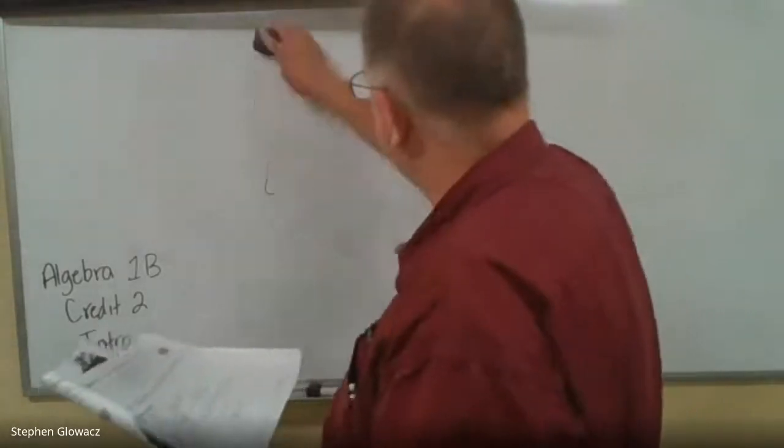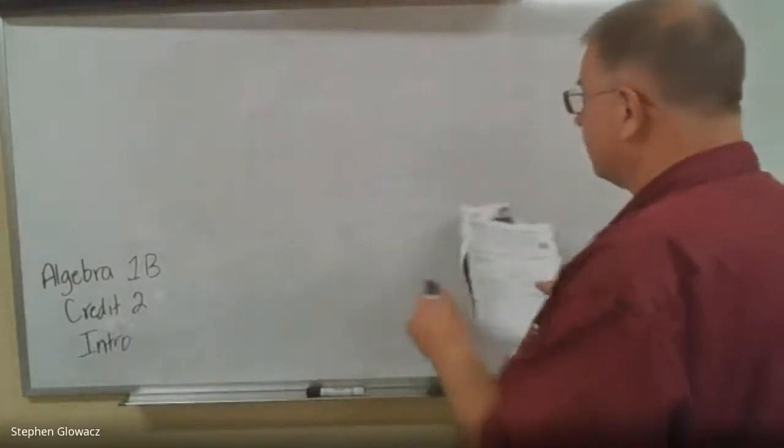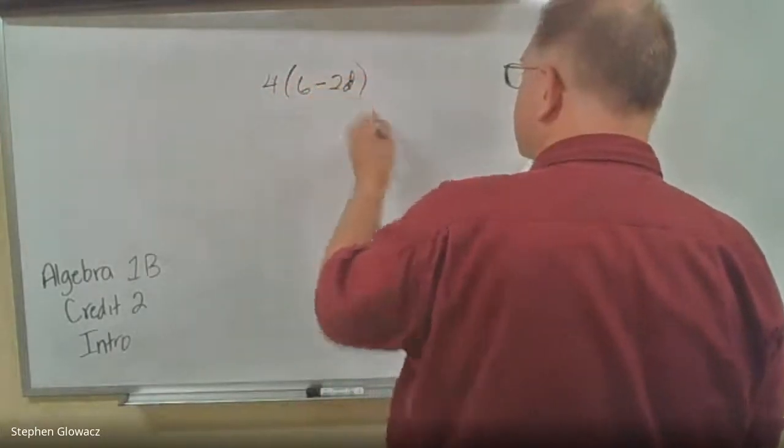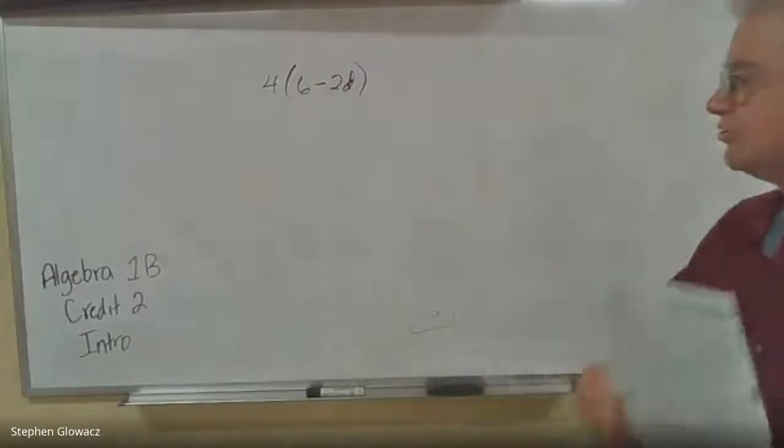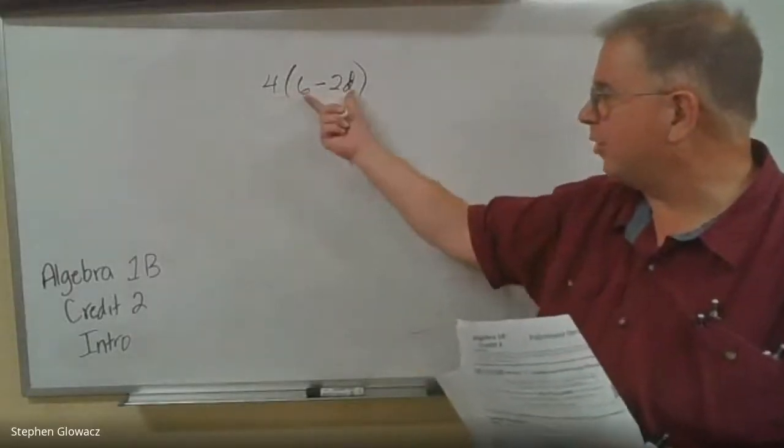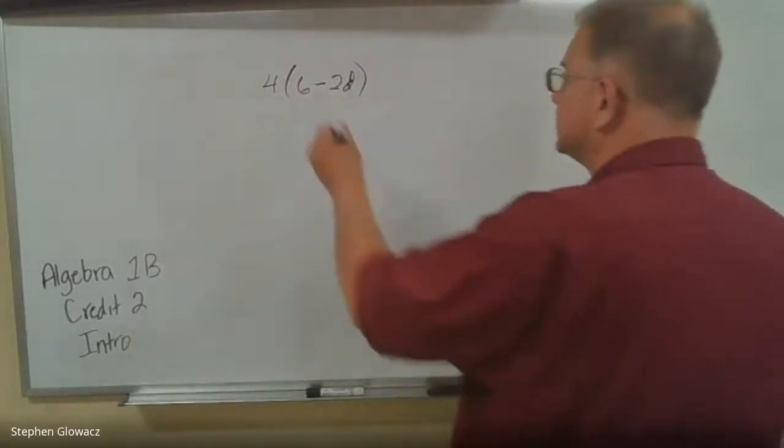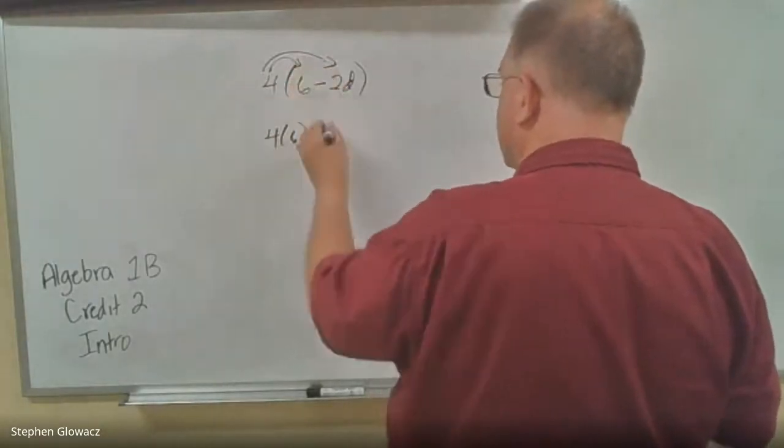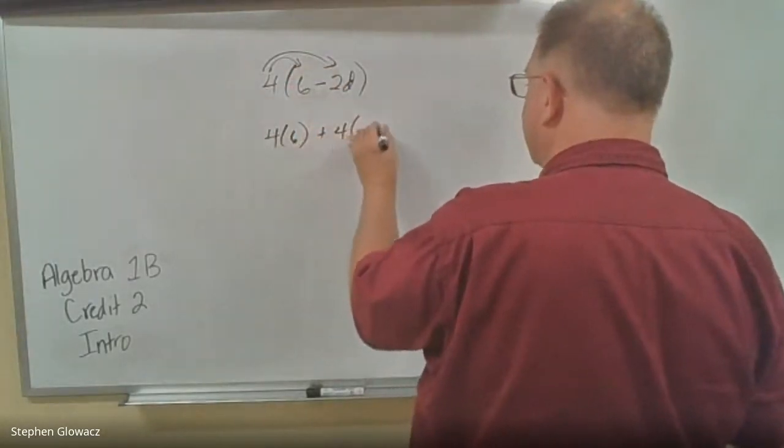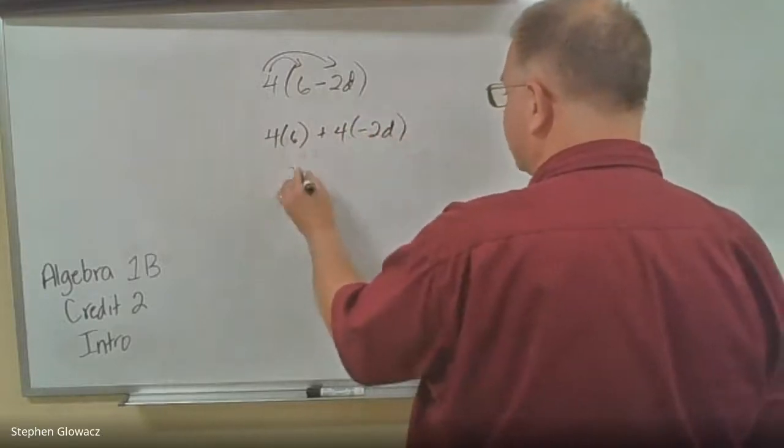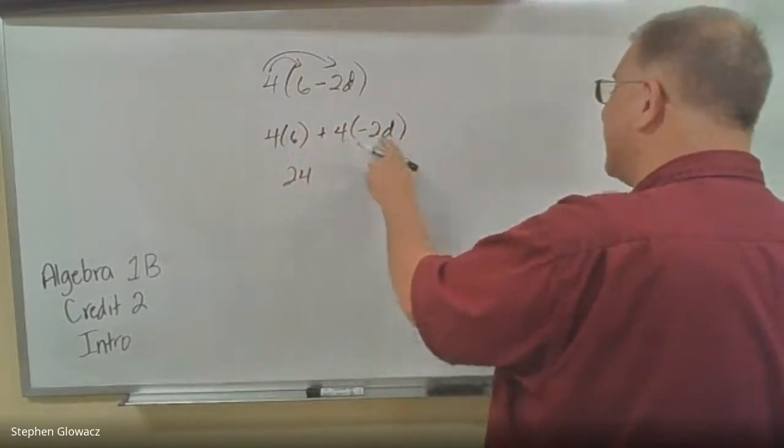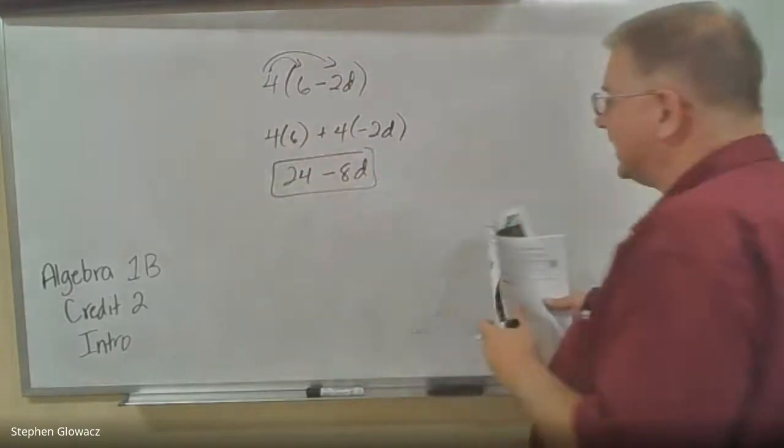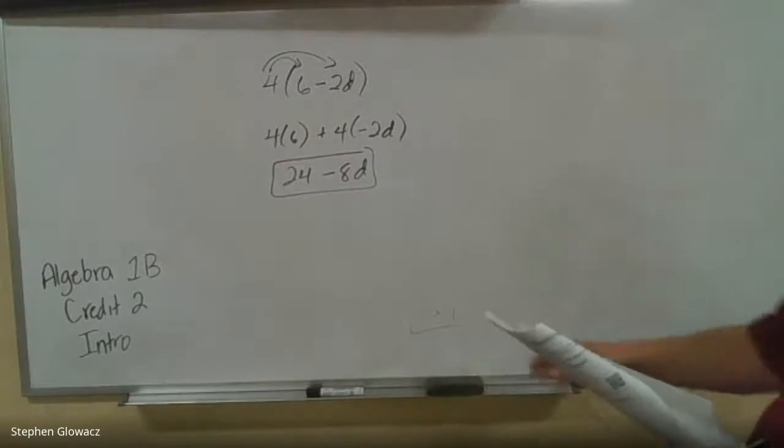Number 5, we've got 4 times 6 minus 2D. Same thing, we're going to distribute or multiply that 4 to both the terms inside the parentheses. So we've got 4 times 6 and then 4 times negative 2D. 4 times 6 is 24, 4 times negative 2 is negative 8. So we've got 24 minus 8D. And that is number 5.